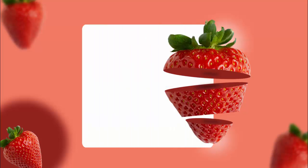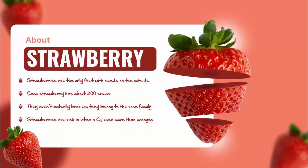In today's tutorial I'm going to show you how to create this in PowerPoint. I have taken one strawberry image, cut it into three different pieces, and given it a kind of 3D look. You can add any text — I've just put information about strawberry and some facts. Depending on your requirement, you can choose any shape or fruit and cut it into pieces in the same format.